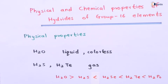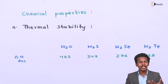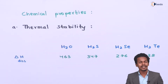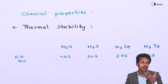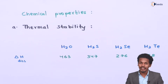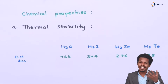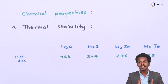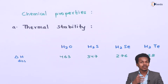Now I will talk about the chemical properties of the hydrates of group 16 elements. Starting with the first one, that is thermal stability. The water molecule is very much thermally stable, and that is the reason the boiling point of water is 373 Kelvin, while the rest of the other hydrates have a boiling point lesser than 373 Kelvin. This proves that water is a more thermally stable molecule compared to the others.